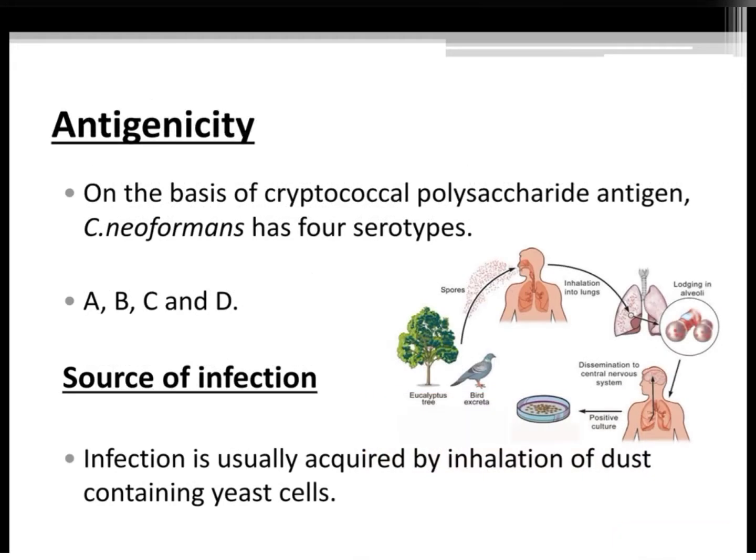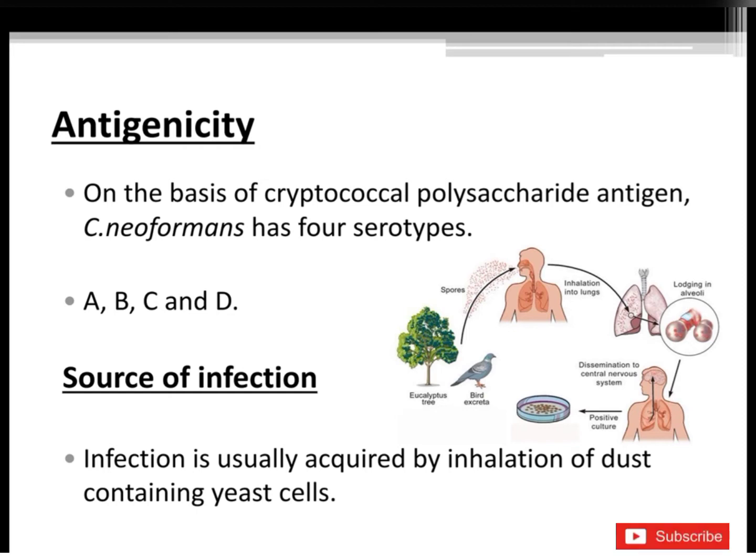The capsule may be demonstrated by India ink or nigrosin staining. Regarding antigenicity, on the basis of cryptococcal polysaccharide antigen, Cryptococcus neoformans has four serotypes: A, B, C, and D.